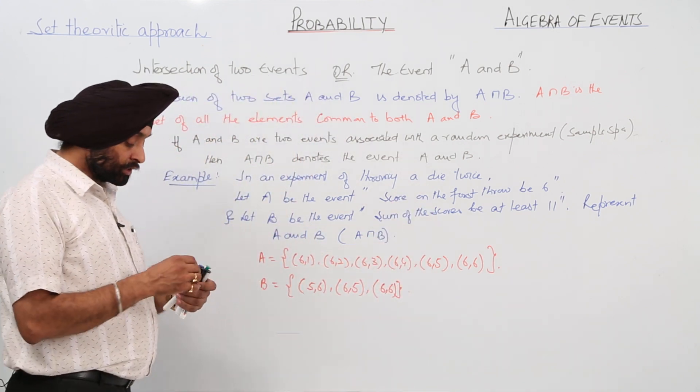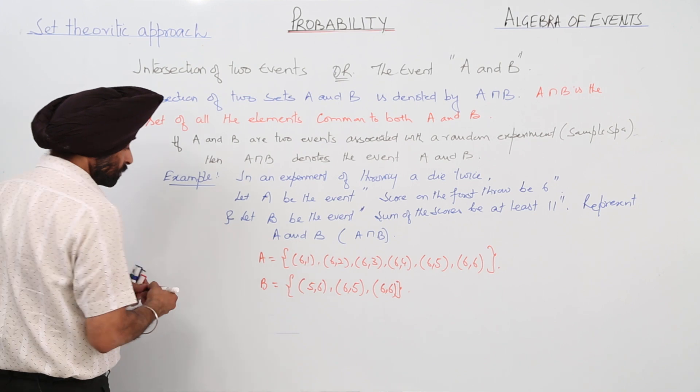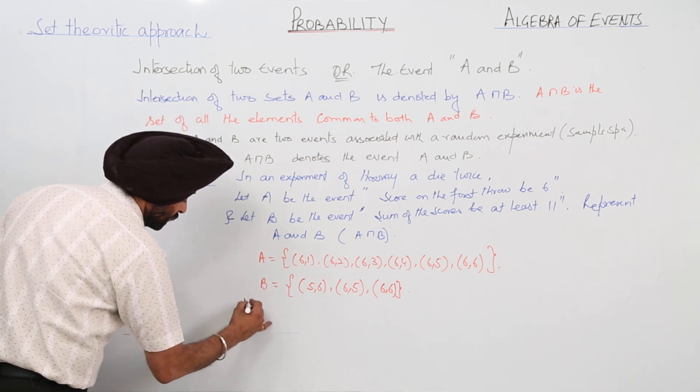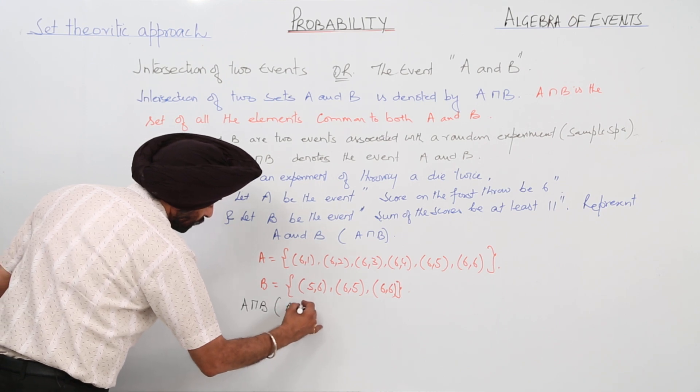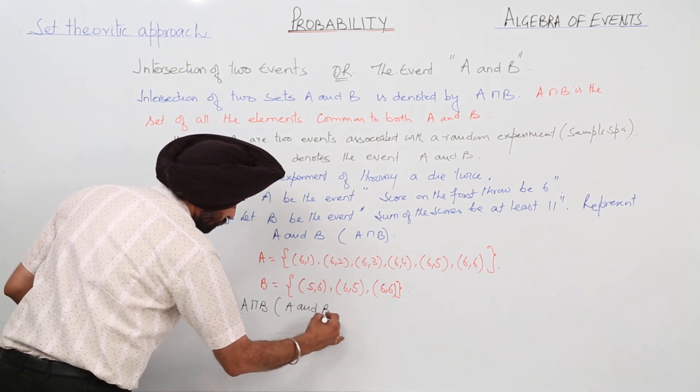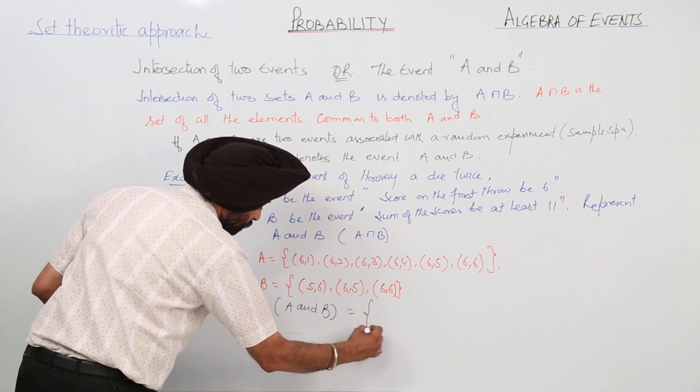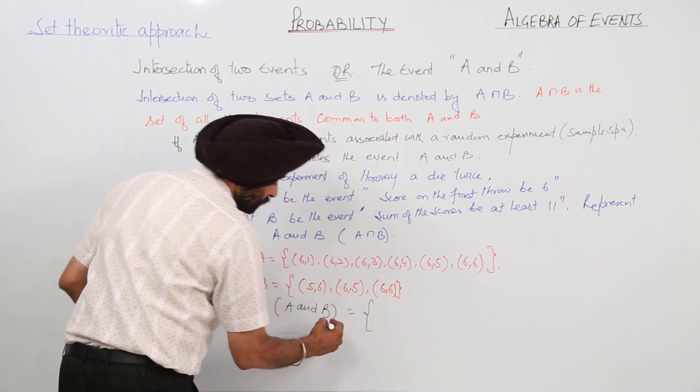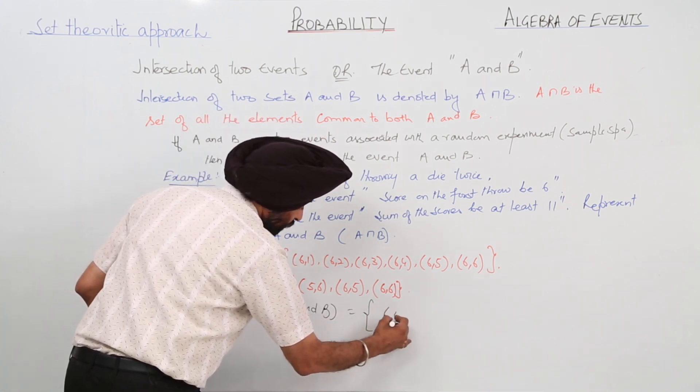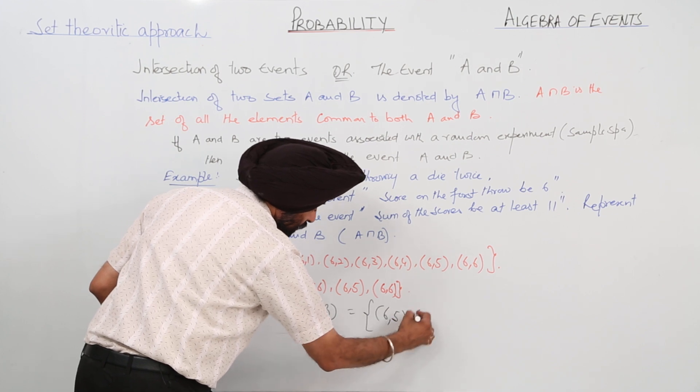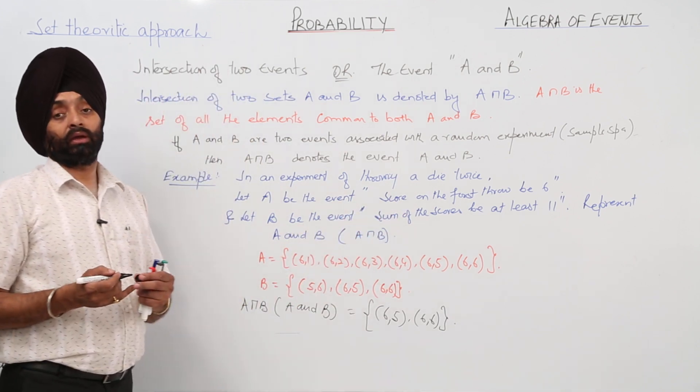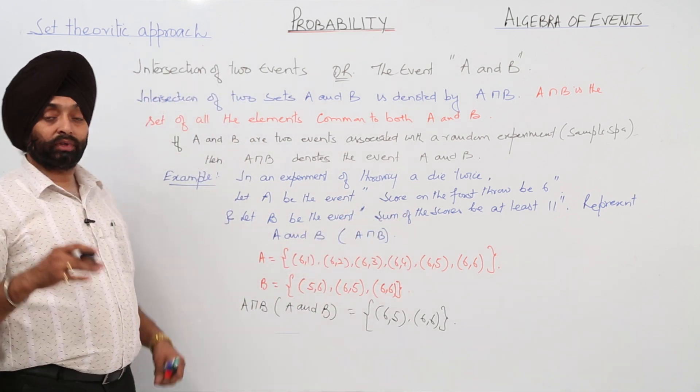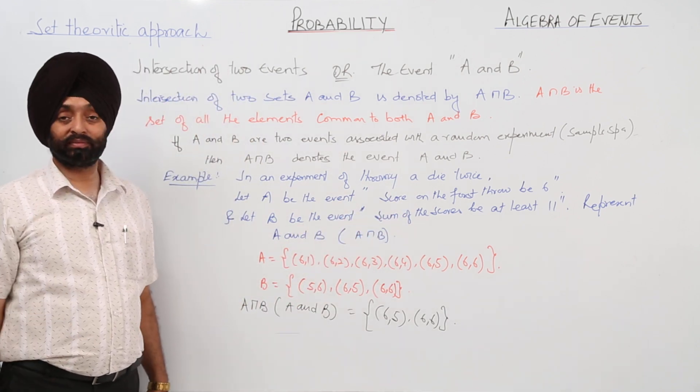Now what is common? That is A intersection B. A and B is equal to 6,5 and 6,6. This means intersection of the two events.